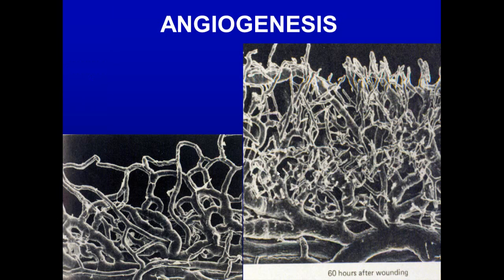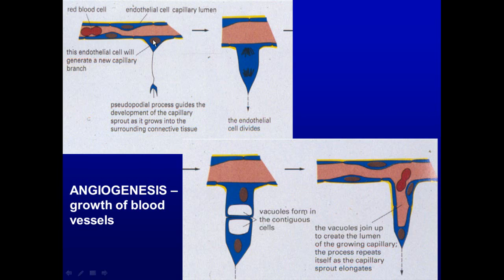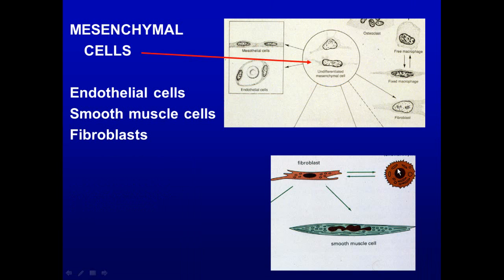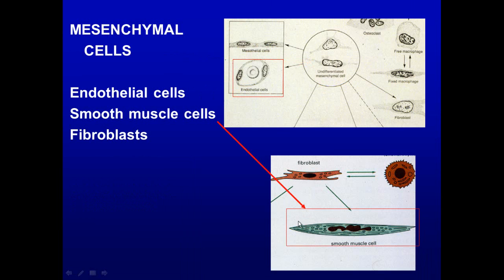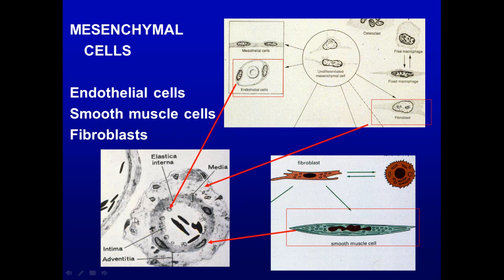Another component is angiogenesis — the development of new blood vessels during transplant regrowth and bone formation. Endothelial cells send out pseudopodia, the cell divides, small vacuoles appear, and a space forms as capillaries bud off the main capillary. Also remember that in connective tissue there are three cell types: the endothelial cell lining blood vessels, the smooth muscle cell surrounding endothelial cells, and fibroblasts around the outside. All of these are derived from undifferentiated mesenchymal cells from bone marrow.